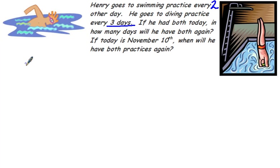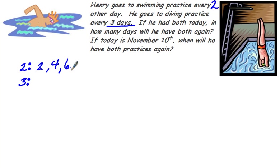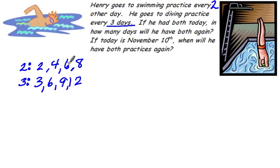So we want to find the least common multiple of 2 and 3. The multiples of 2 are 2, 4, 6, 8, and so on. Then the multiples of 3 would be 3, 6, 9, 12, and so on. Again, you're looking for your least common multiple. So in 6 days, he'll have both again.